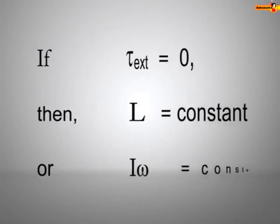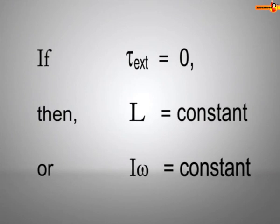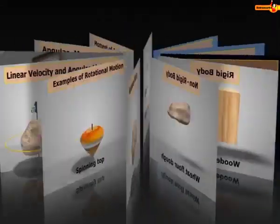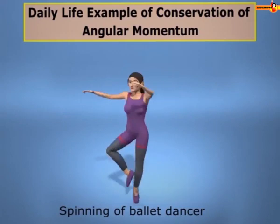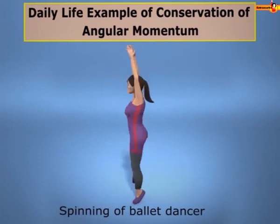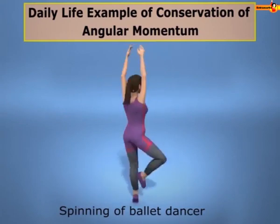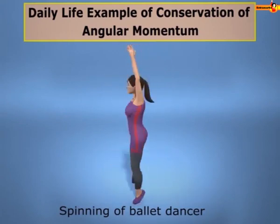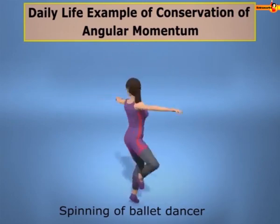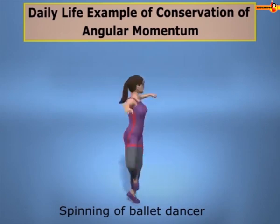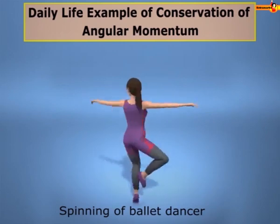The law of conservation of angular momentum states that in the absence of an external torque on a body, its angular momentum remains constant. A ballet dancer starts spinning with her arms overhead; when she spreads her arms, her rotation slows down.